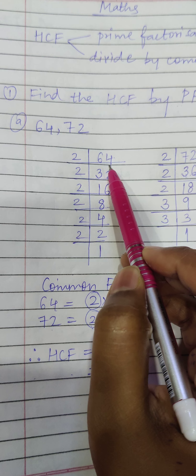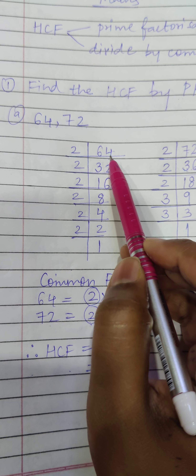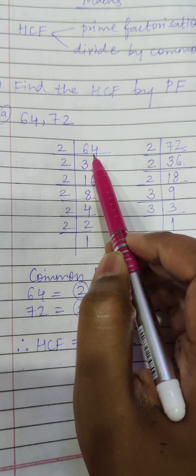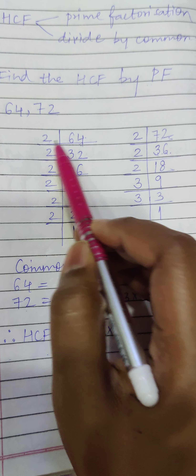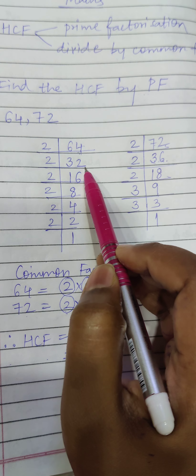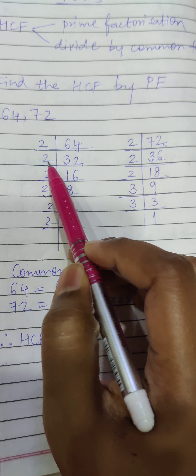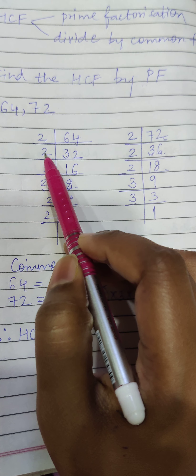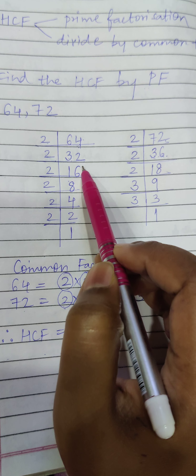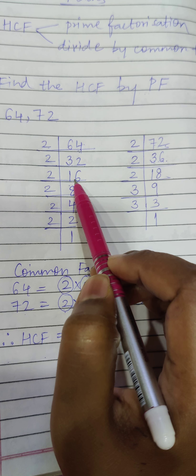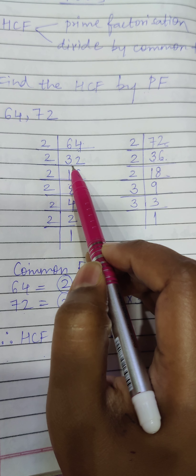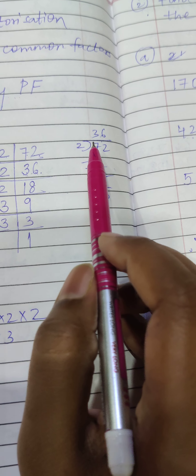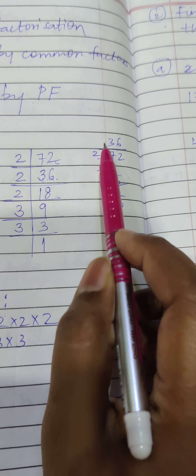I am going to take 2, because the last digit is 4, so it will obviously divide easily by 2. So I take 2: 2 threes are 6, 2 twos are 4. Then I take 2 again because 32 can be divided by 2. Again 2 is written here. For those who cannot directly divide here, you can divide step by step and easily get the answer.